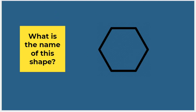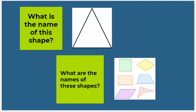A shape that has six sides and six angles is called a hexagon, so this is a hexagon. How about this one up here? Let's count the sides: one, two, three sides, and one, two, three angles, so this one is called a triangle.